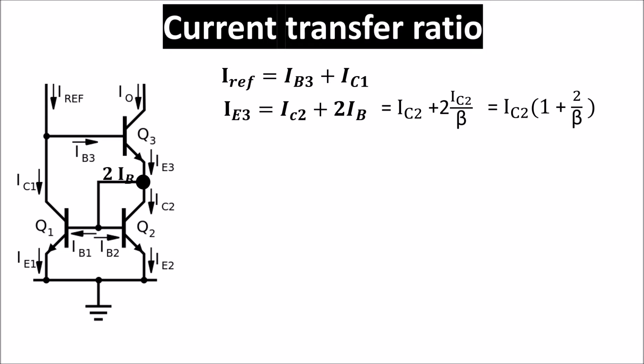So IC2 is equal this and we can write IE3 as sum of IC3 plus IB3 and IB3 as IC3 divided by beta 3 or simply by beta if the transistors are matched. This is the relation between IC2 and IC3, where IC3 is the output current IE3.